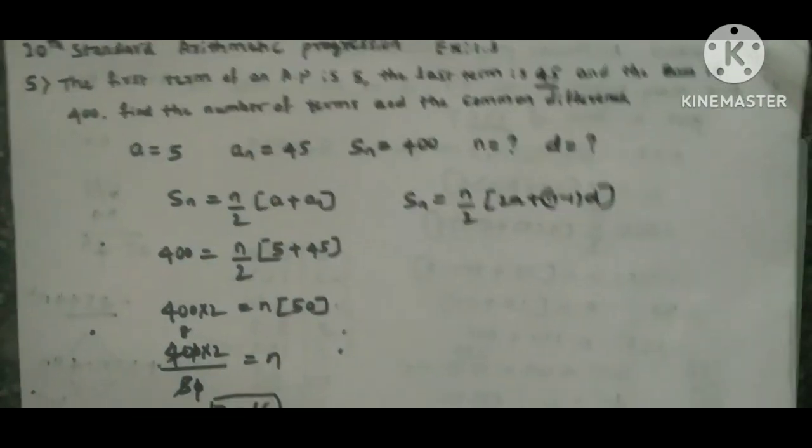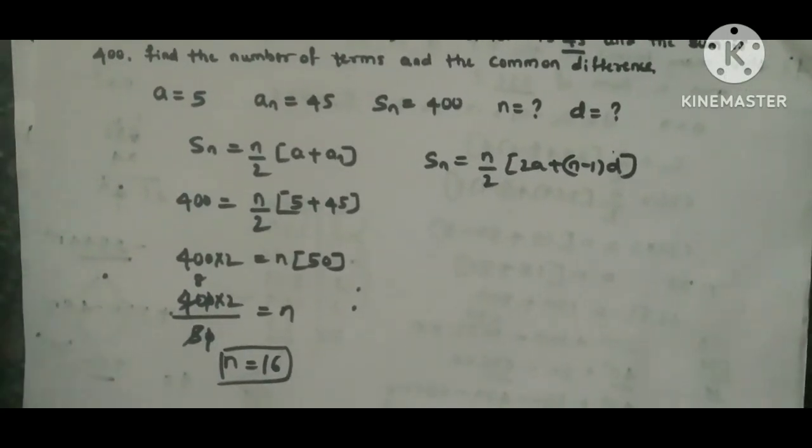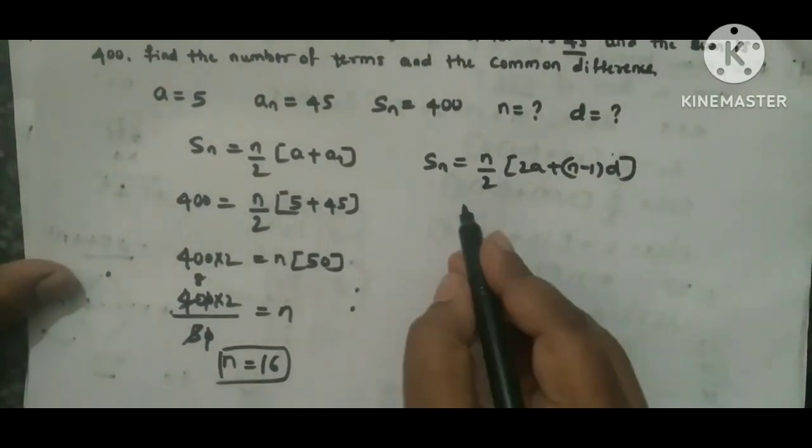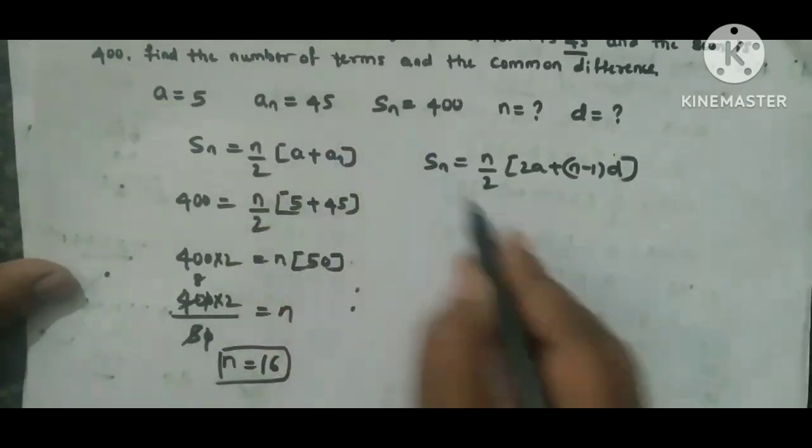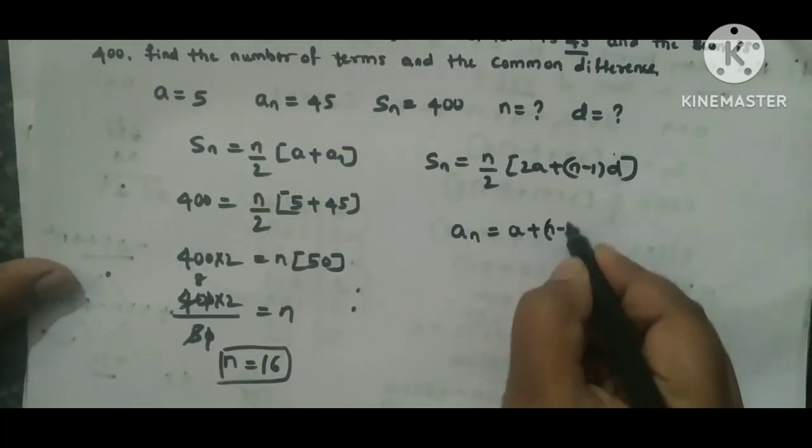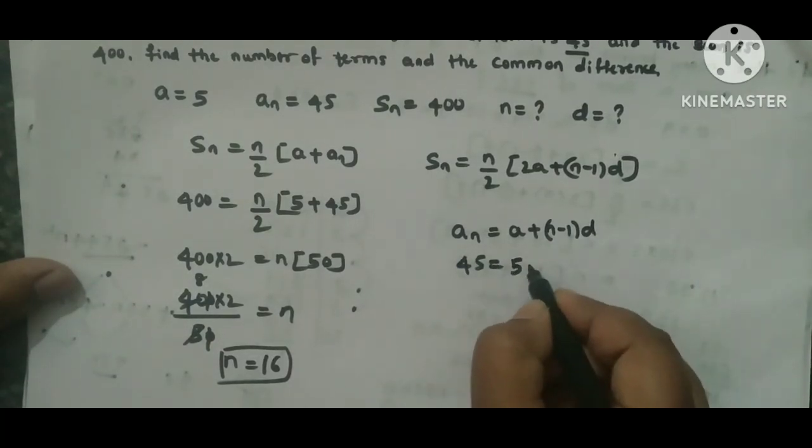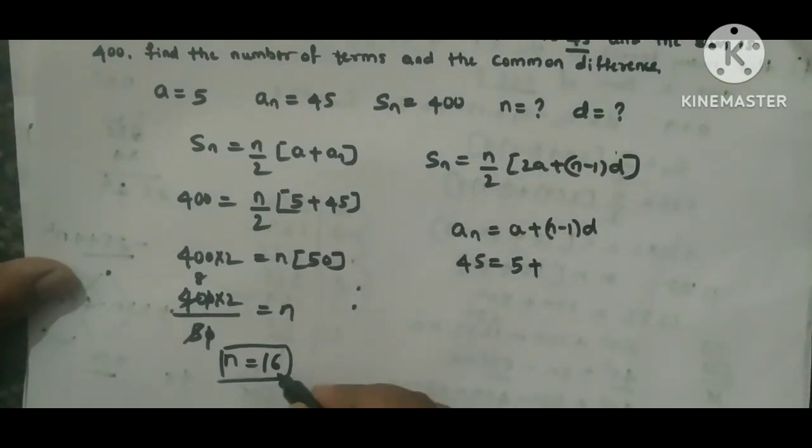Now we have to find d value using an formula. What is an formula? an = a + (n-1)d. So here an is 45 = a value is 5 + n is 16, just now we found it, 16 - 1 × d. d we need to find here.